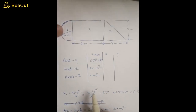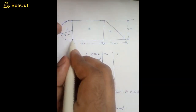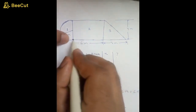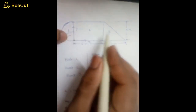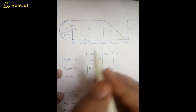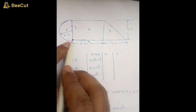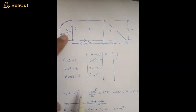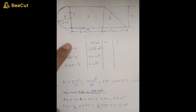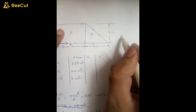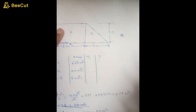We assume this corner is the origin, so this will be the x-axis and this will be the y-axis. With respect to this axis, the centroid of the semicircle in the x-direction is 4r upon 3 pi. The centroid of a semicircle is 4r upon 3 pi — you can find this formula in any textbook.